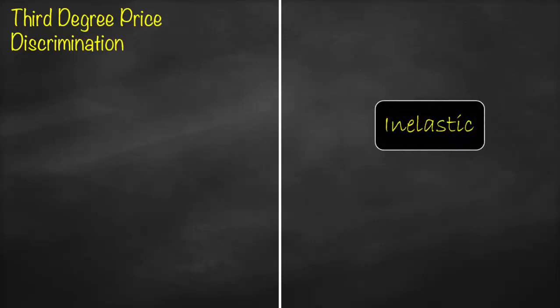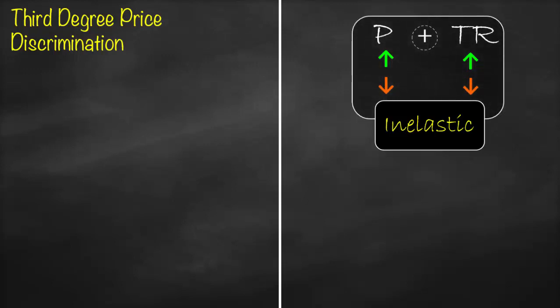The third degree of price discrimination is based on elasticity. So for inelastic, what is the relationship between price and total revenue? It's a positive relationship. If price goes up, total revenue will go up. If price goes down, total revenue will go down. Therefore, if your customers are inelastic, it's better to increase price in order to increase total revenue.